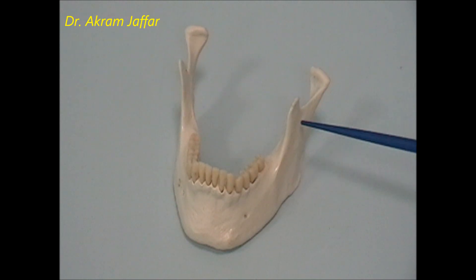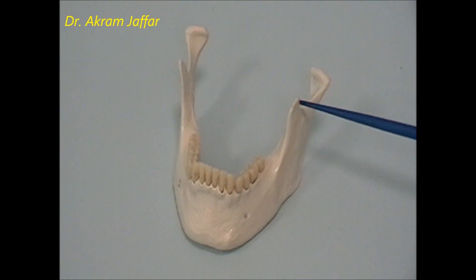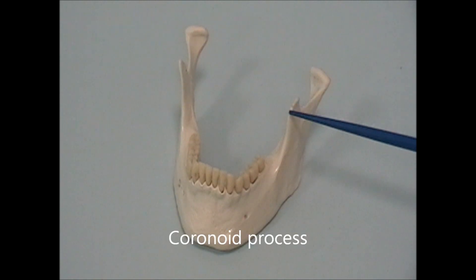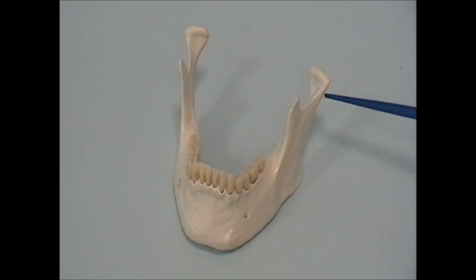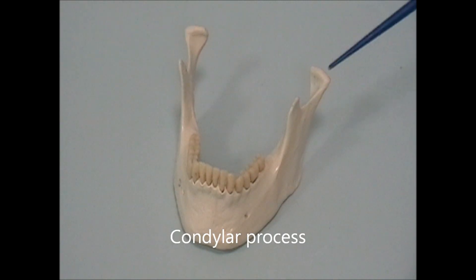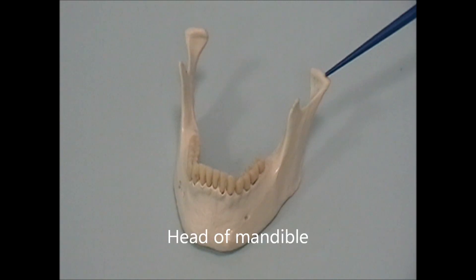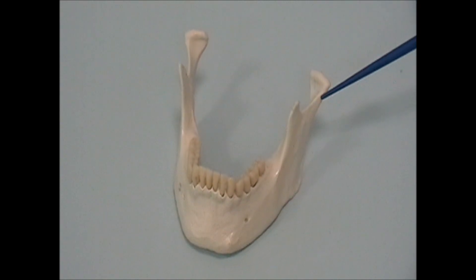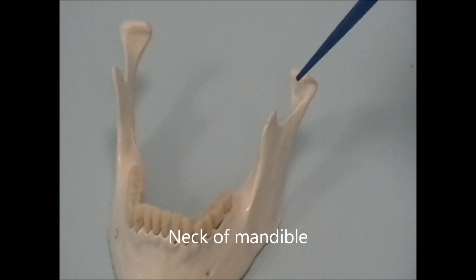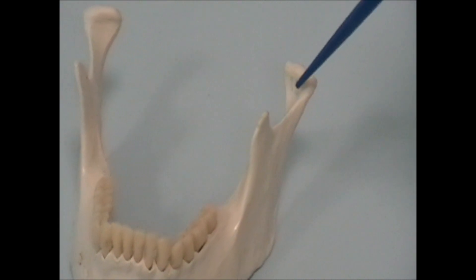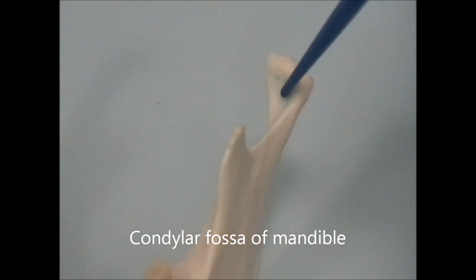The ramus of the mandible is characterized superiorly by two processes. Anteriorly is a flattened process, which is called the coronoid process of the mandible, and posteriorly we have the condylar process. The condylar process has a head and a neck, and there is a condylar fossa here.